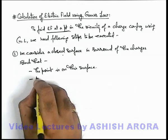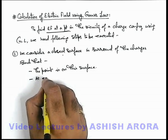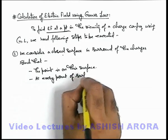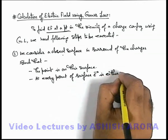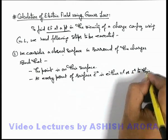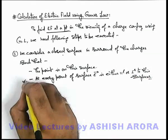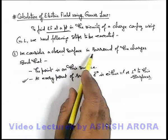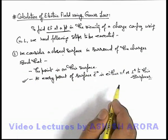Another very important point to be taken care of is that at every point of the surface, the electric field vector is either parallel or perpendicular to this surface. This is not necessary to apply Gauss's Law, but it is a very useful characteristic. If we take care of this point while considering a closed surface in the surrounding of the charges, the application of Gauss's Law will become mathematically simpler.